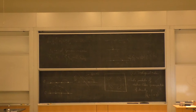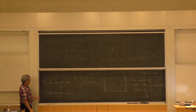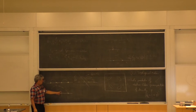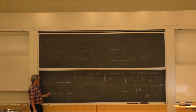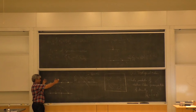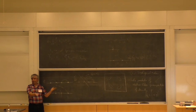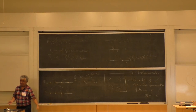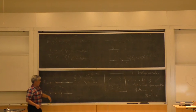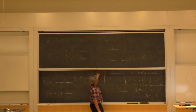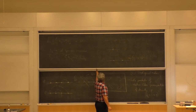So it's a very standard kind of thing. When you take this Gaussian matrix model, the only graphs that survive are the non-crossing rainbow graphs. You can do this to all orders. And so as N goes to infinity, there's a very simple equation for the Green's function.